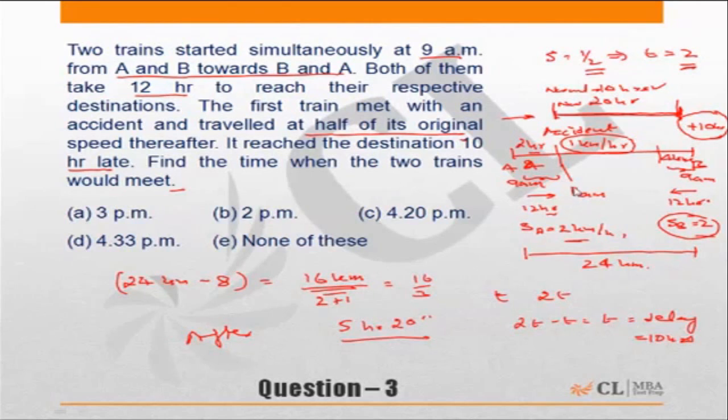After what? After the accident. The accident happened at 11 a.m. After 11 a.m. it will take this much time more. So what time did the trains meet? 11 plus 5 is 16, which is 4. 4:20 p.m. is the correct answer.